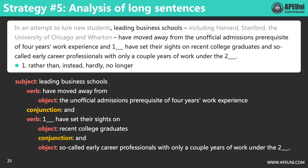The verb 'have set their sights on' is sharing the same subject with the previous verb 'have moved away from.' The conjunction AND before it is connecting two verb-plus-object structures. Then there is another AND, again connecting two similar parts. 'So-called early career professionals with only a couple years of work under the blank' is a noun phrase in which the center word is 'professionals.' There is no verb in this part, so this is another object sharing the same verb 'have set their sights on' with the previous object 'recent college graduates.' The AND before it is connecting two objects.